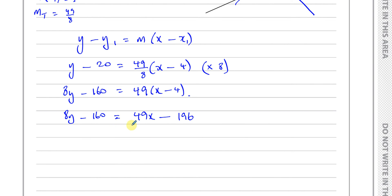Now I want to have it in the form ax plus by plus c equals 0, so everything should be on one side. I'm going to make this side 0, so my x term is positive. That's always better to write it like that. So 49x minus 8y, and I have negative 196 plus 160, which is going to be minus 36.